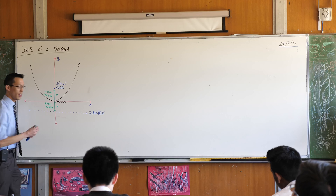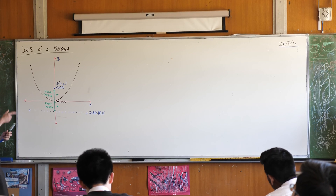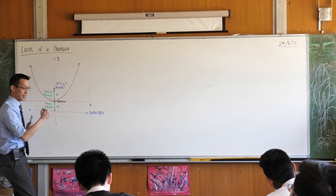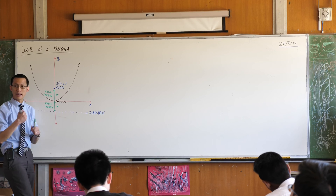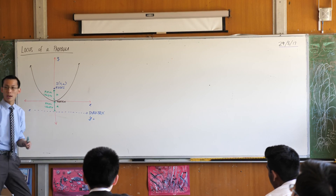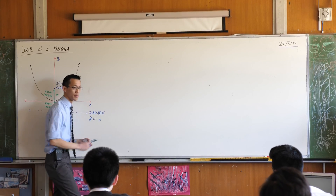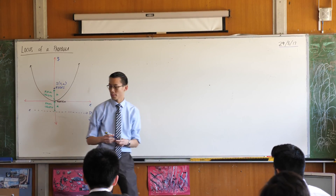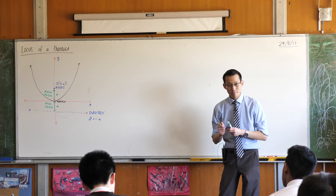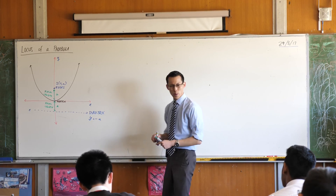So therefore I know the equation of this directrix. It's a horizontal line, in this case, meaning its equation will be y equals negative A, because it is clearly below the axis.